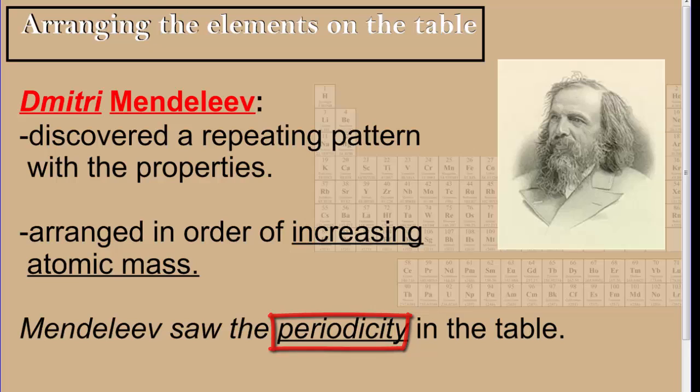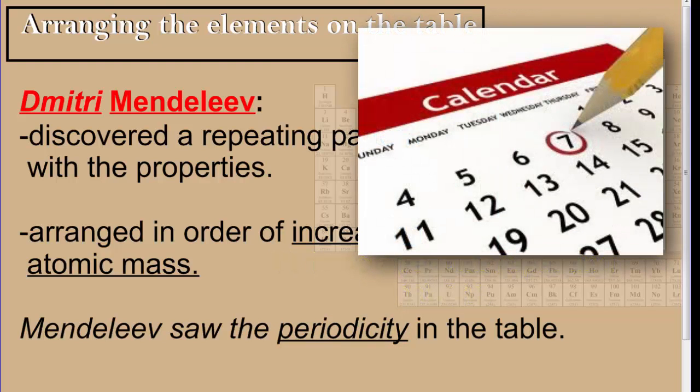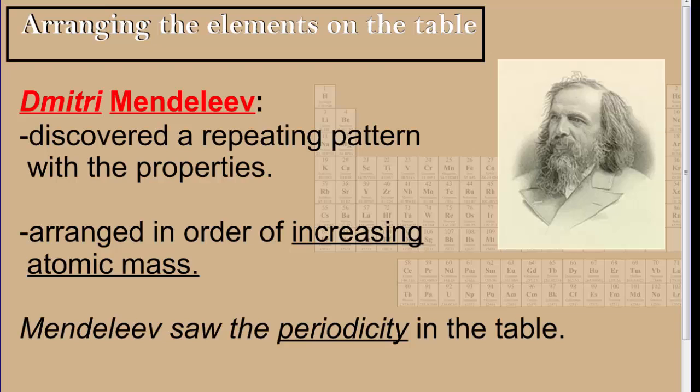Periodic, or to be periodic, means happening at regular intervals, a regular repeating pattern. For instance, the days of the week are periodic. They repeat in the same order every seven days. Similarly, Mendeleev found that the elements' properties followed a pattern that repeated every seven elements. His table became known as the periodic table of elements. So there was a lot of pattern to it.